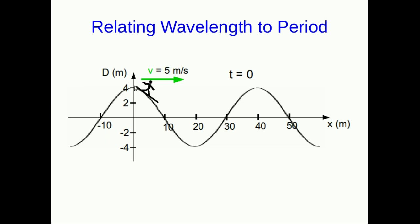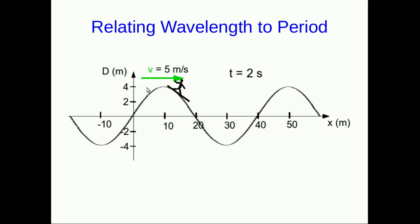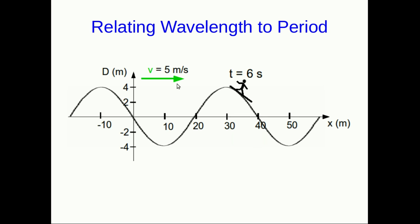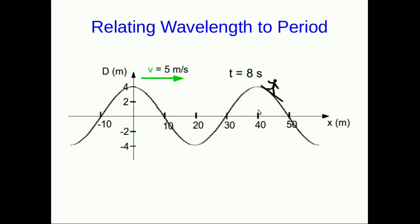So if you were to watch this surfer, and by extension the wave they are on, moving five meters per second this way, then here we are at t equals zero. At t equals two seconds, they would have moved 10 meters, which puts this peak right here. And at four seconds, they're here. And at six seconds, they're here. And at eight seconds, they're here.